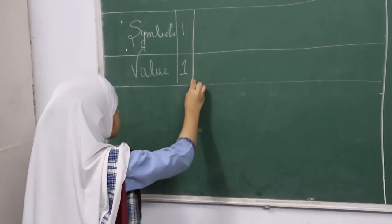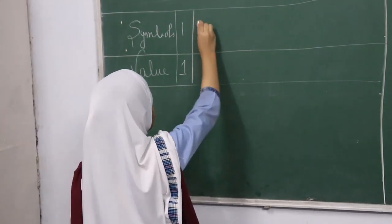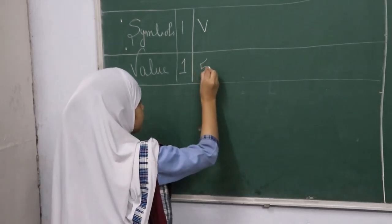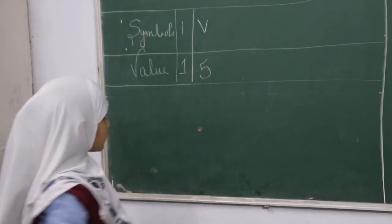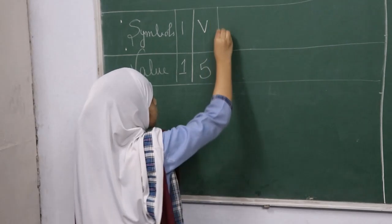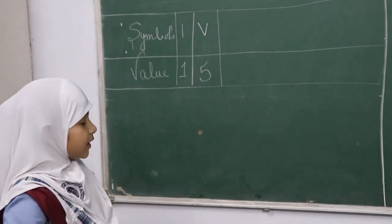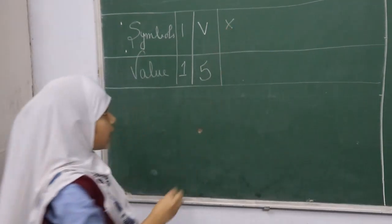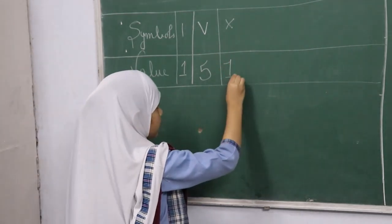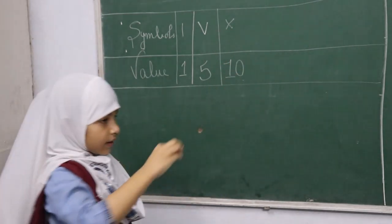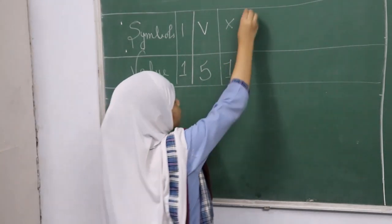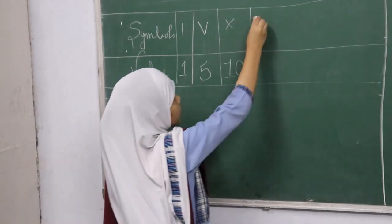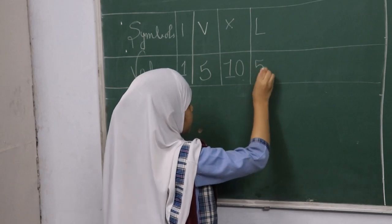The second symbol is V, whose value is 5. The third symbol is X, whose value is 10. The fourth symbol is L, whose value is 50.